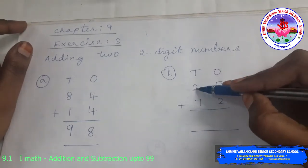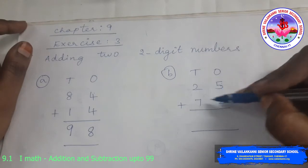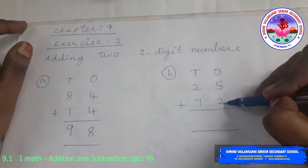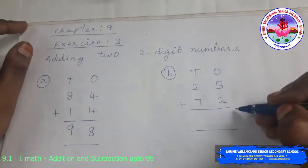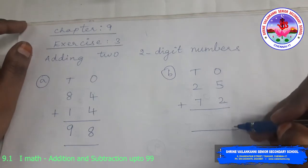And write the number correctly in its place. 25 has 2 10s and 5 1s. 72 has 7 10s and 2 1s. So you write exactly the number below its place.